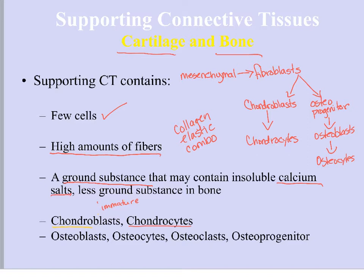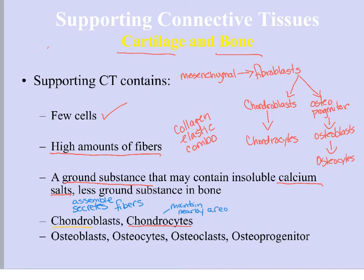Chondroblasts are kind of like fibroblasts in that chondroblasts assemble and secrete fibers, just like fibroblasts do. Chondrocytes do not have the ability to do that — chondrocytes really just maintain the area around them. So chondrocytes are going to maintain the ground substance around them but are not going to assemble and secrete fibers. Chondroblasts are the ones assembling the fibers, secreting the fibers, and making the ground substance. A chondrocyte is really just a mature chondroblast.